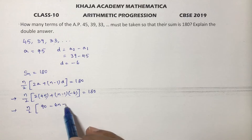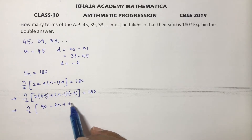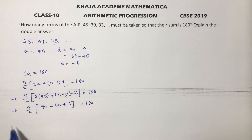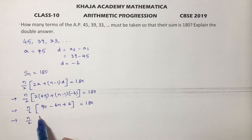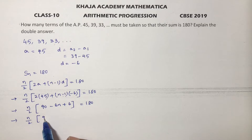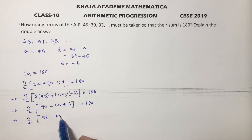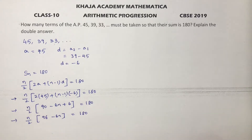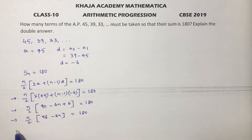Expanding: n by 2 into 90 plus 6 minus 6n equals 180, since minus times minus gives plus 6. So n by 2 into 96 minus 6n equals 180.